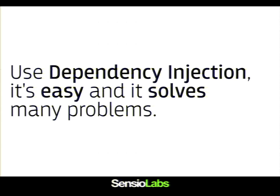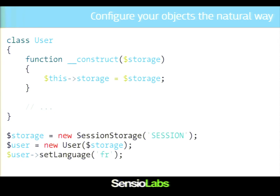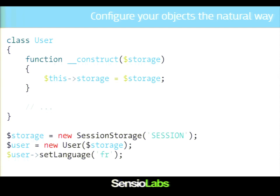Don't try to be smarter than dependency injection — it's not going to work. If I'm talking about dependency injection using the second version of the class, you can configure things the way you want. If you want to use a different session name, easy to do. If you want to use a session storage on Memcache, easy to do as well. The user class is exactly the same as before — it does not change anymore.